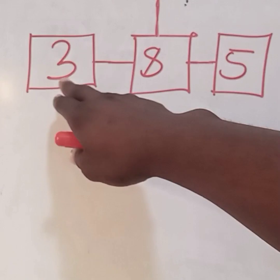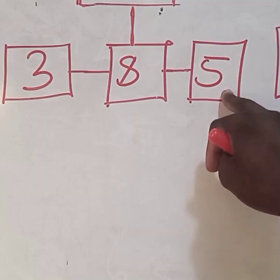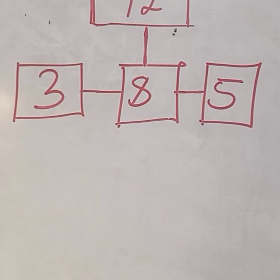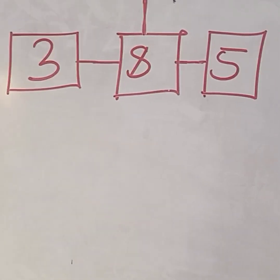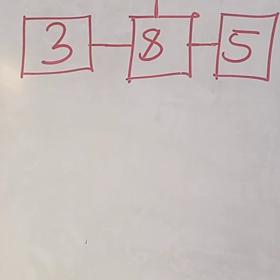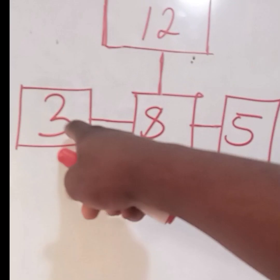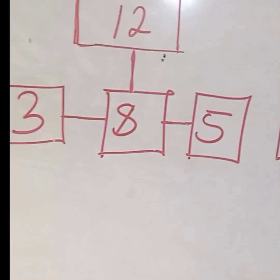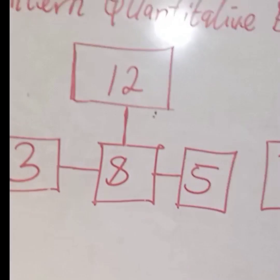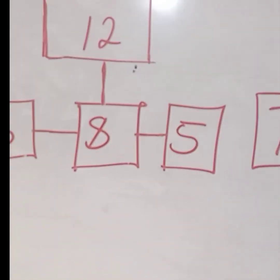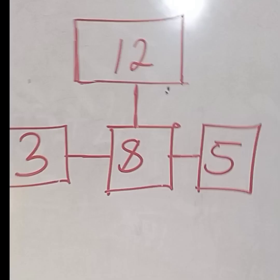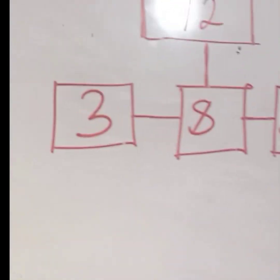Now we have 3 here, we have 8 here, we have 5 here, and we have 12 up. How are we going to get 12? Say 3 times 5, which is 15, minus 8 is not giving us 12. How are you going to get 12? This is a very simple thing. For you to get 12, this is what we are going to do.